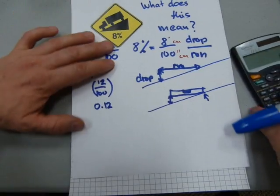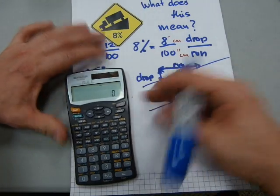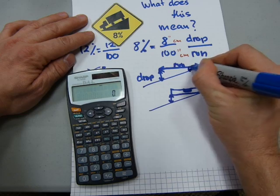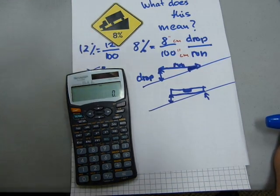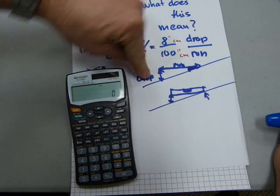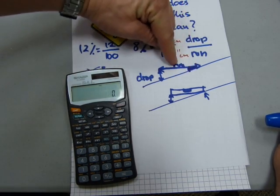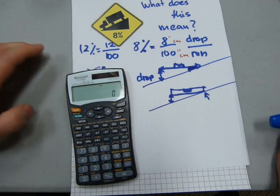And then you need a tangent function on this scientific calculator, because if you want to determine that angle, and this is trigonometry and high school, whatever, this is the opposite side and that's the adjacent side to that angle. Adjacent to that angle and opposite to that angle.